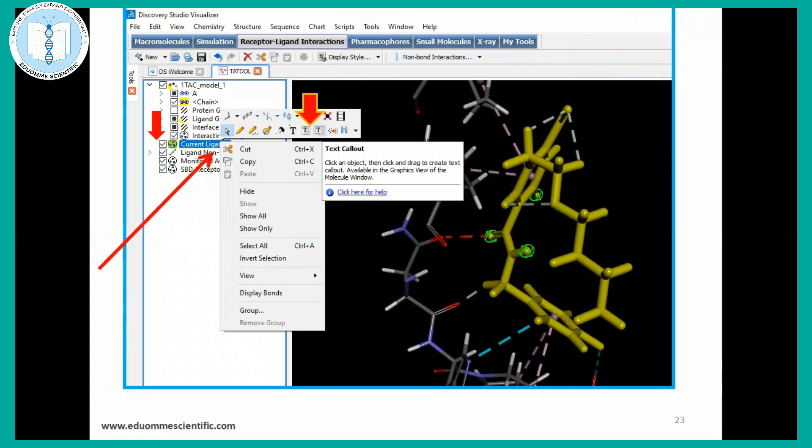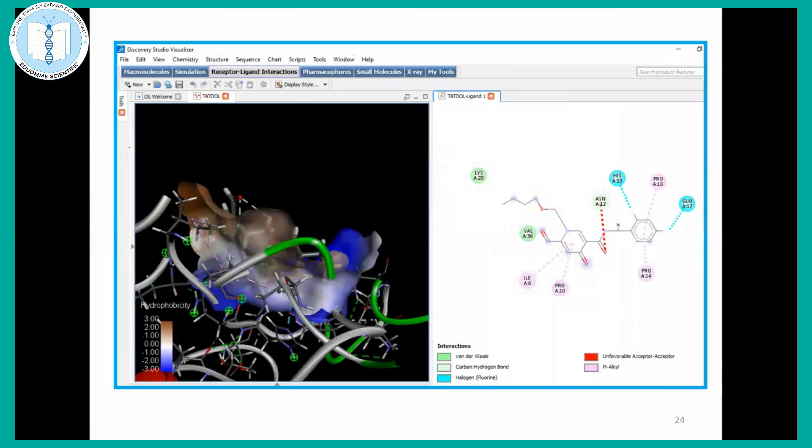If you want to provide the namings and the texts around those interaction, that also can be done from here. You can get your 3D and 2D interactions also, which you can utilize for your publications.